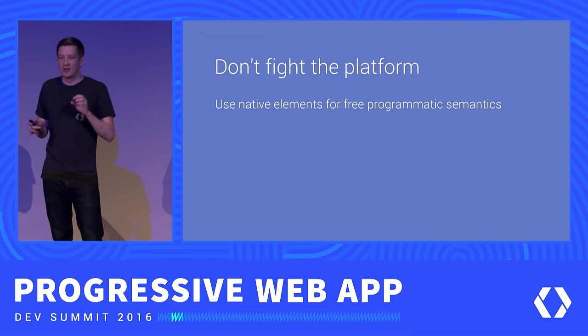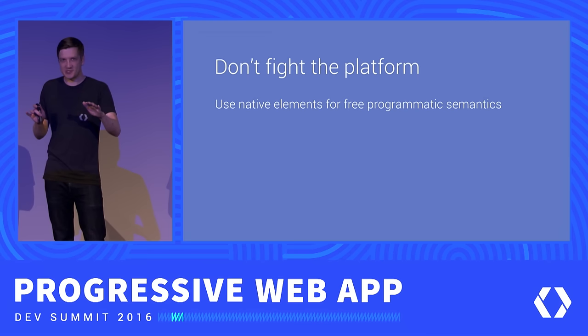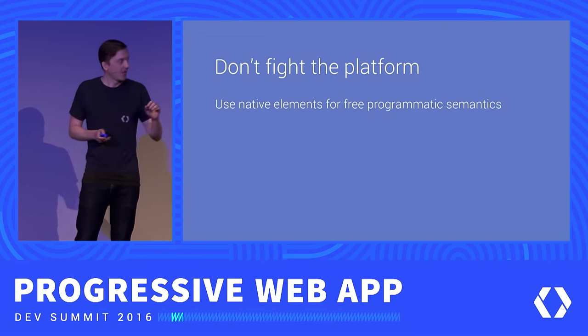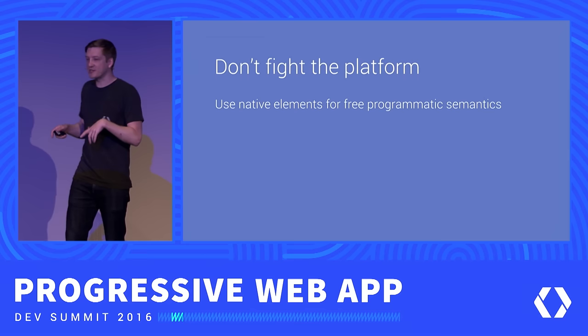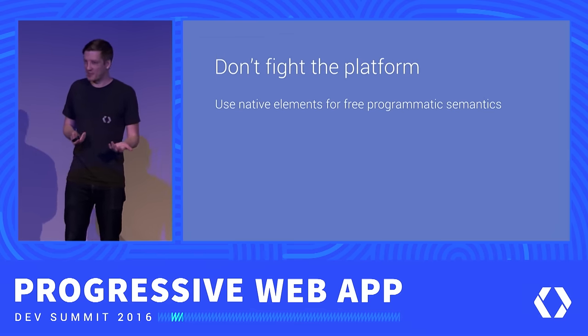I hope at this point no one is considering writing a div button ever again. If anyone leaves here and writes a div button, I have failed all of you. But there are times when you need to build something that doesn't have a native element equivalent, or you just need to go off road. In those situations you can use the Web Accessibility Initiative's Accessible Rich Internet Application Spec, or ARIA. ARIA allows you to specify attributes on an element and modify that element's semantics — you can think of it like doing surgery on the accessibility tree.